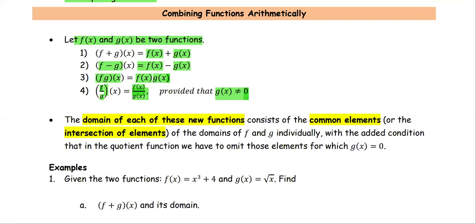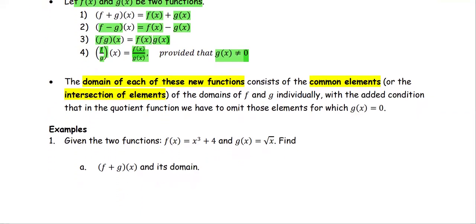The function f divided by g of x cannot be zero — otherwise it's going to be undefined. The domain of each of those new functions considers the common elements, or the intersection of the domains of f and g individually, with the added condition that for the quotient function, we have to omit those elements for which g equals zero.